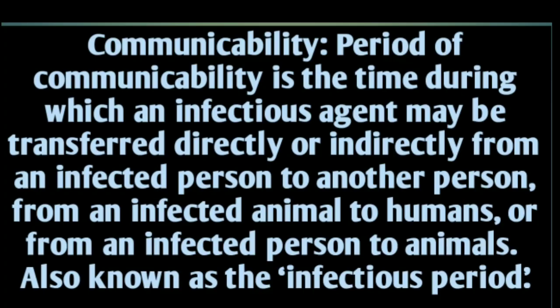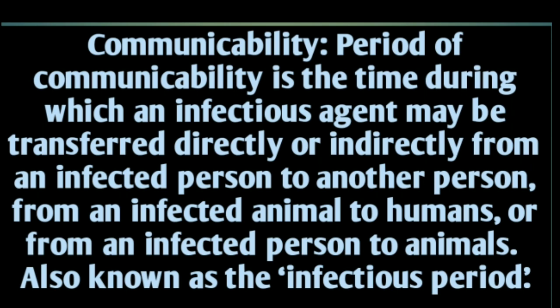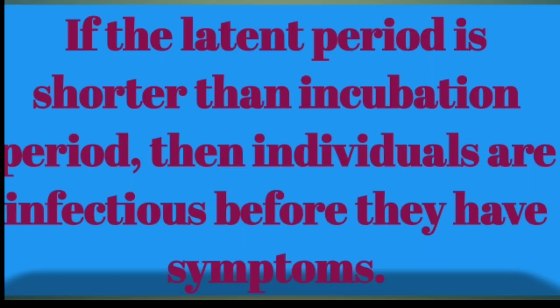The period of communicability is the time during which an infectious agent may be transferred directly or indirectly from an infected person to another person. This is also called the period of infectiousness. The already-infected organism is a potential source of infection for other healthy people or organisms.